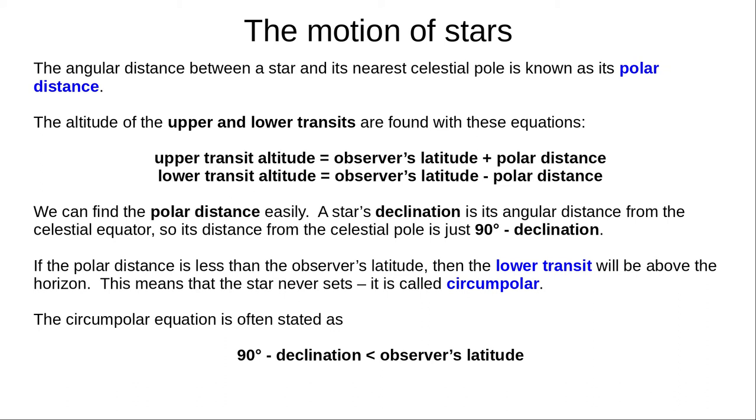Upper transit altitude is your latitude plus the star's polar distance, and lower transit altitude is your latitude minus the star's polar distance. A star's declination is its angular distance from the celestial equator. Since the celestial poles are 90 degrees from the celestial equator, a star's polar distance is just 90 degrees minus its declination.